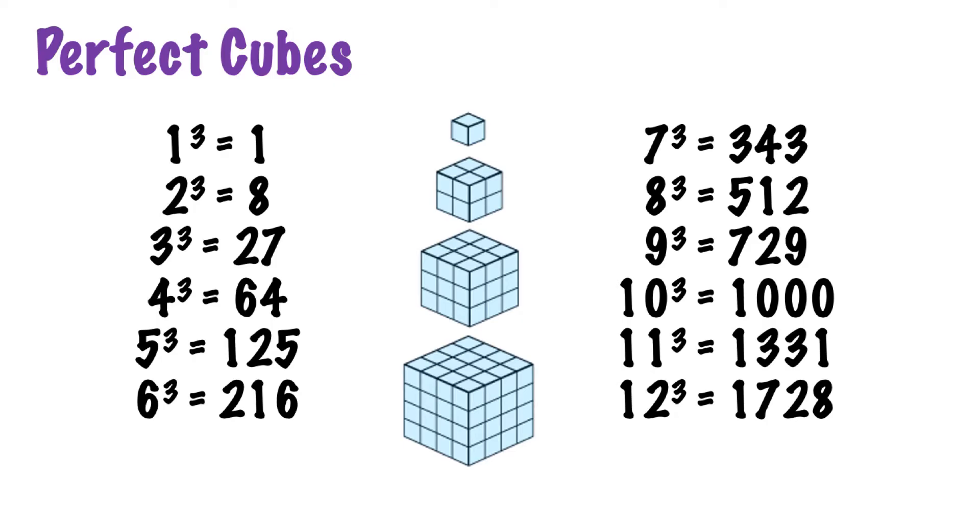In our previous geometry topic we learned about numbers that are perfect cubes, and we call them perfect cubes because their cube root is a whole number. So here are the first 12 perfect cubes: 1, 8, 27, 64, all the way up until 1728. When we're talking about cubed, it's saying that 2 cubed means 2 times 2 times 2 gives us 8. So if we're finding the cube root of 8, it's thinking what number multiplied by itself 3 times gives us 8.